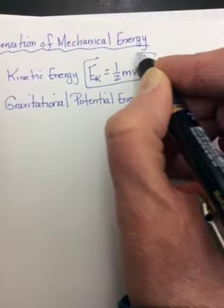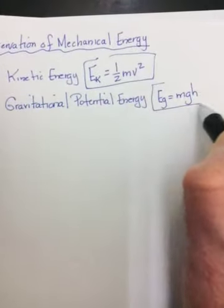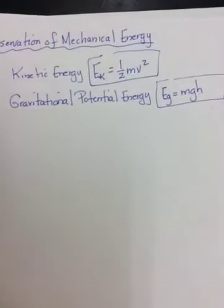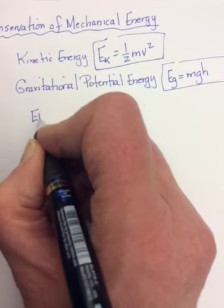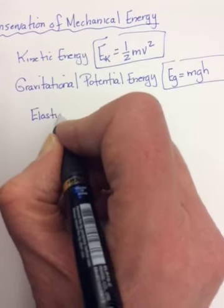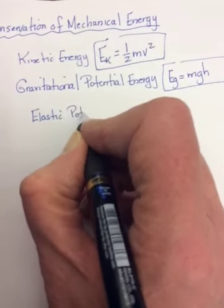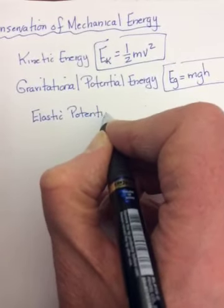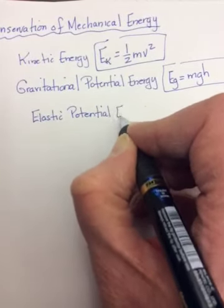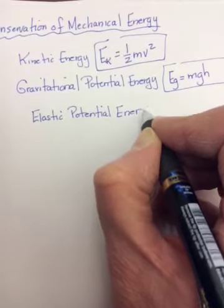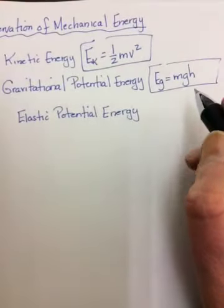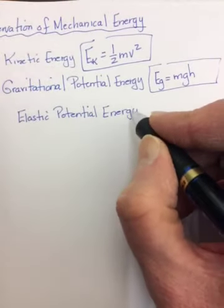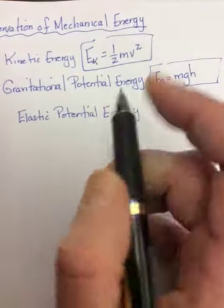So those were two of our three energies that we used in grade 11. Our third one is also another potential energy, elastic potential energy. This is the energy that you will find in things that are stretched, like springs, elastic bands, your clothing maybe.